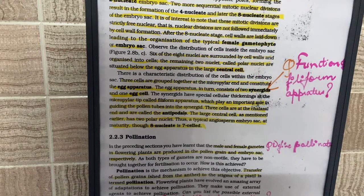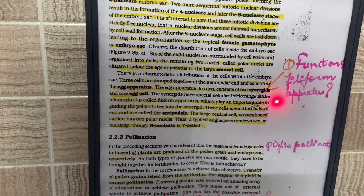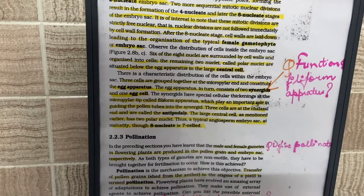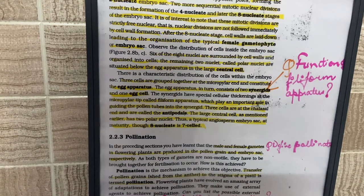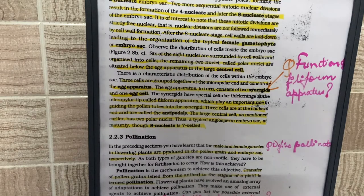Moving to page 27, a very important question is: what is the function of the filiform apparatus? The filiform apparatus is a cellular thickening present near the synergids. It guides the pollen tube towards the synergid — when the pollen grain lands on the stigma and forms the pollen tube, the filiform apparatus helps guide it into the synergids and then into the ovule.